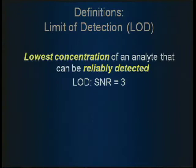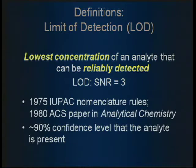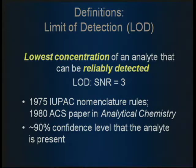The next definition is limit of detection, or LOD. The LOD is the lowest concentration of an analyte that can be reliably detected. It corresponds to a signal-to-noise ratio of three for a peak. At three, a peak doesn't look very good, but there's about a 90% confidence level that the analyte is actually present — enough information to say there is a peak. This was taken from the 1975 IUPAC rules and also supported by a 1980 ACS paper in Analytical Chemistry.